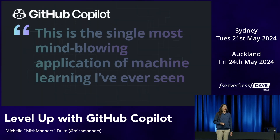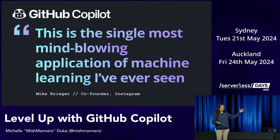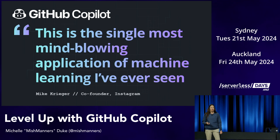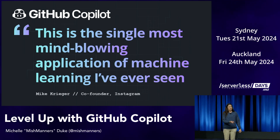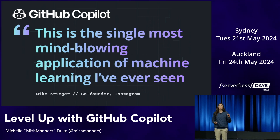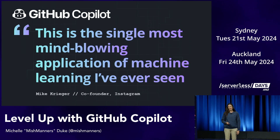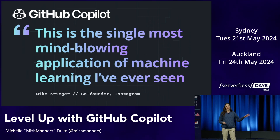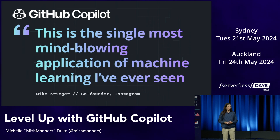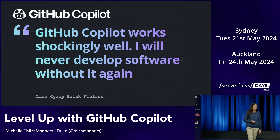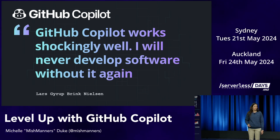When we first launched GitHub Copilot, a little company called Instagram called it the single most mind-blowing application of machine learning they'd seen. Keep in mind this was towards the end of 2021 — ChatGPT was only just starting to emerge and this type of generative AI was only just coming out. Another senior developer said 'this works so well, never going to develop without it again.' And we hear this a lot: once people start using GitHub Copilot, they say they don't know how they coded before.